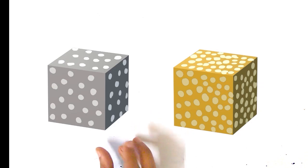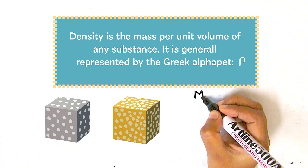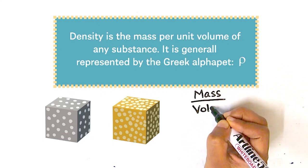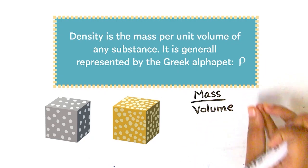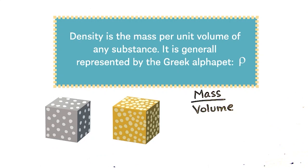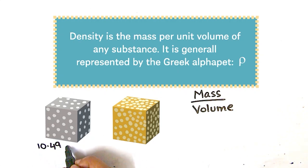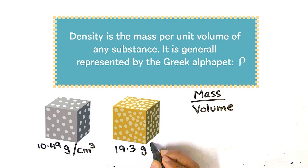Density is the mass of a substance present in a unit volume of that substance. So for the silver cube, assuming a volume of one centimeter cube, the density is 10.49 grams per centimeter cube. For the gold cube, the density is 19.3 grams per centimeter cube.